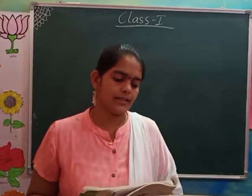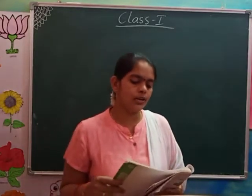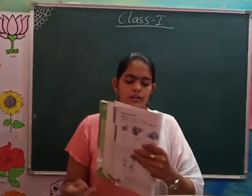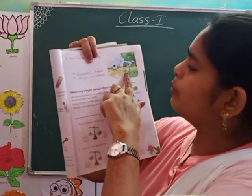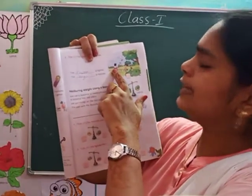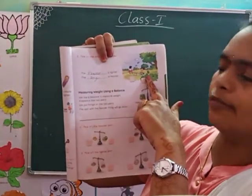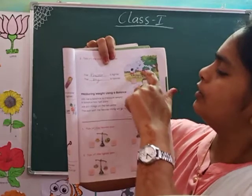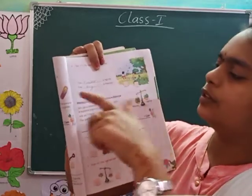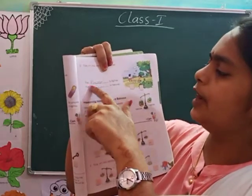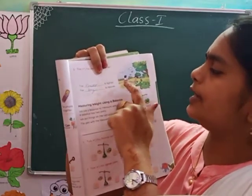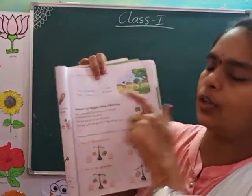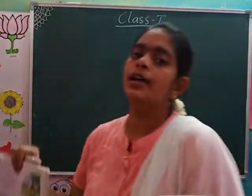And next, tick the one who is heavier — boy or girl? The boy is heavier, so you have to tick on the boy. The girl is lighter than the boy. The boy is heavier.